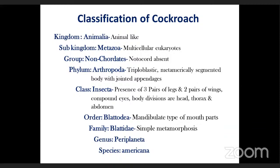Phylum Arthropoda. It is a triploblastic animal — in embryonic stages, three layers are present: outer ectoderm, inner endoderm, and middle mesoderm. It is metamerically segmented, meaning each segment coincides externally as well as internally. This is the characteristic of Arthropoda, and the class is Insecta.